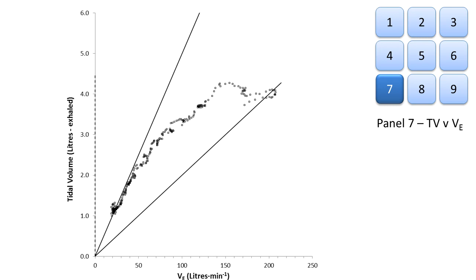This is panel 7, tidal volume against ventilation, with tidal volume on the y-axis and ventilation on the x-axis.